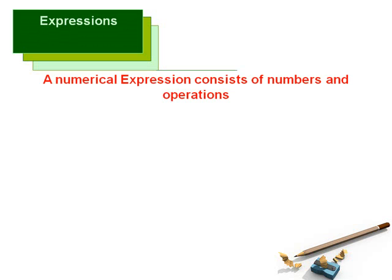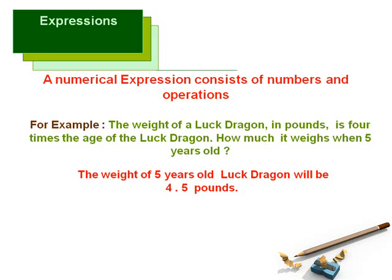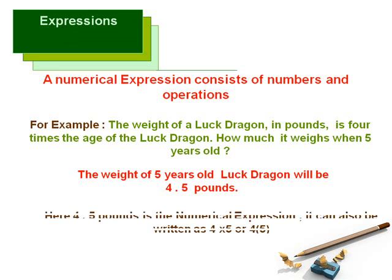As we all know, a numerical expression consists of numbers and operations carried on those numbers. Let's read this statement: the weight of a luck dragon in pounds is 4 times the age of the luck dragon. We need to tell how much it would weigh when it would be 5 years old. The weight of a 5-year-old luck dragon would be 4 times 5 pounds. Here, 4 times 5 is a numerical expression as it has both numbers and the operation of multiplication. It can also be written as shown.